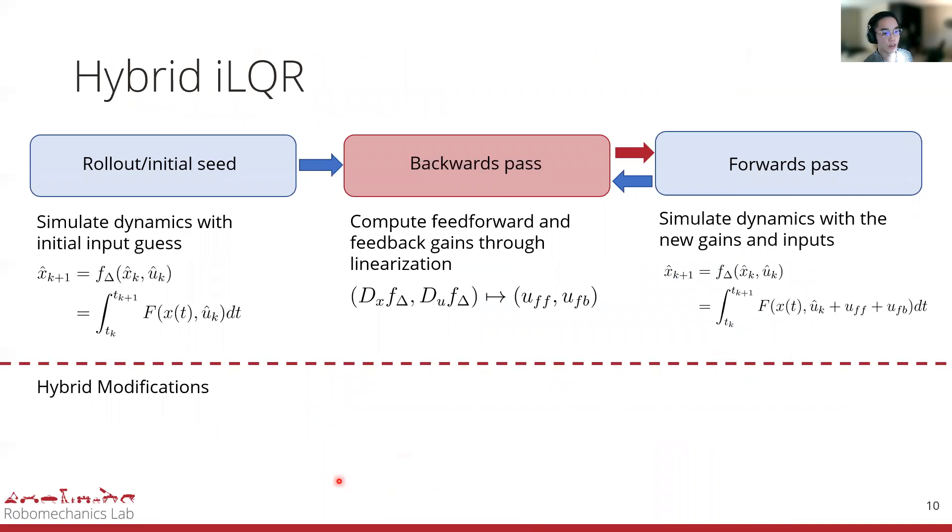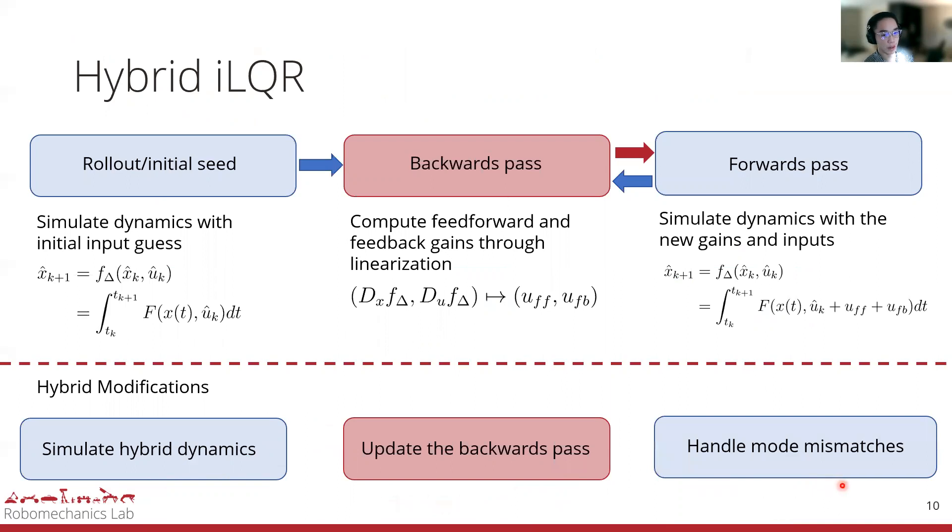So how do we implement iLQR for systems with hybrid dynamics? Well, we make several hybrid modifications. First, the hybrid dynamics need to be simulated. The backwards path needs to be updated to reflect the changes from simulating the hybrid dynamics. And mode mismatches must be handled correctly when we apply the new control policy.